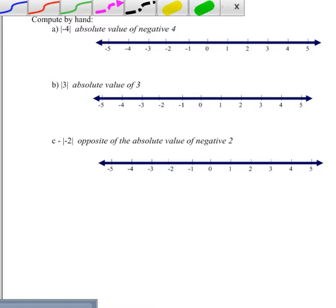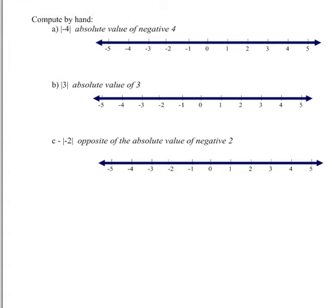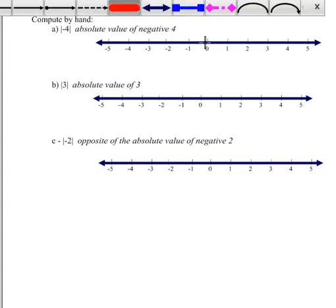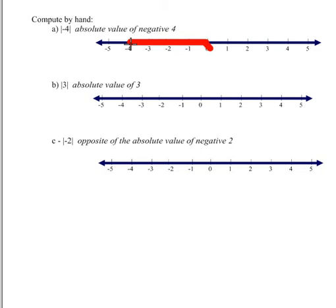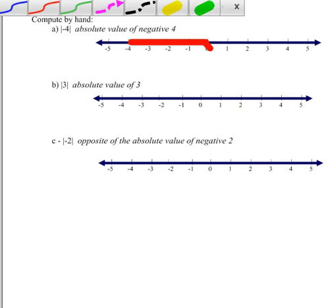So if we find where negative 4 is on the number line, we can see if I want to figure out how far that is from 0, if we take a look at that, from 0 down to negative 4, we have to go down 4 places. And so we would say that the absolute value of negative 4 is just 4.